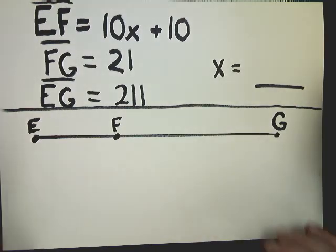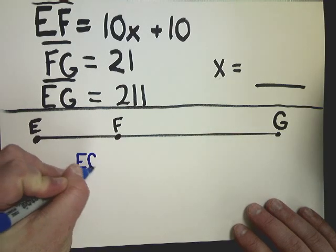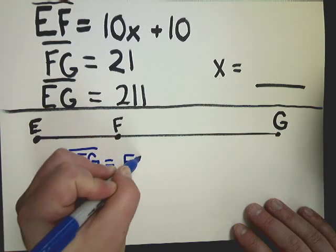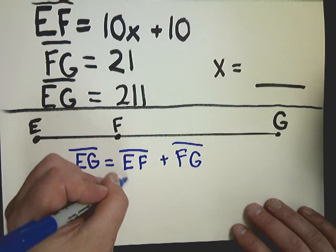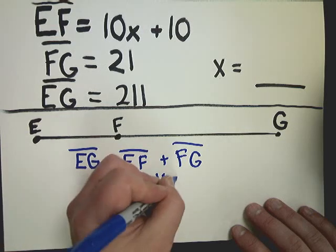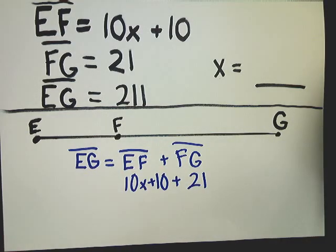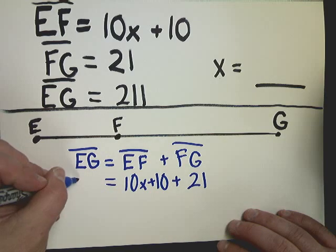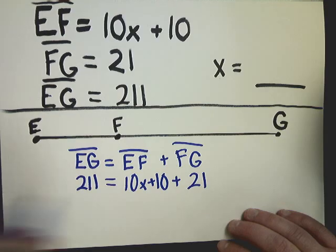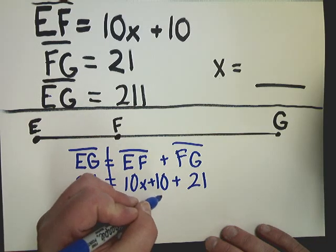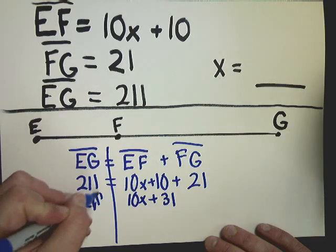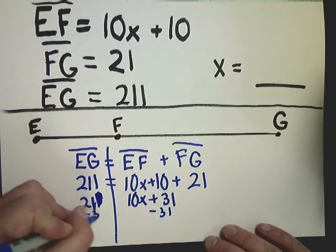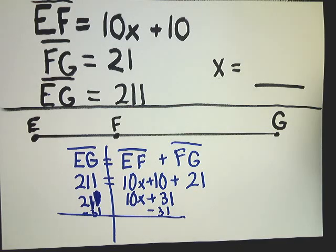This question just asks for what X is. So I'm going to start these like I always do, which is to make a statement. EG is equal to the first smaller segment, so EF plus FG. After this, plugging things in should be simple. EF is 10X plus 10. FG is 21. So I'm going to put plus 21. EG is 211. All I did was take the information and write it down underneath. Solving equations is all I'm doing at this point. So I'm going to add 10 and 21 and get 31. Subtract 31 from both sides. I get 180.